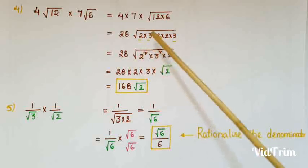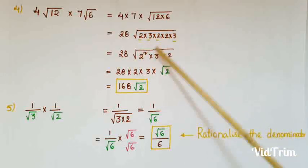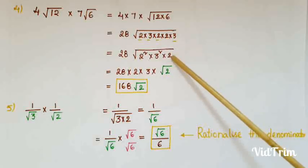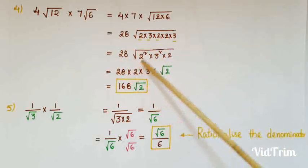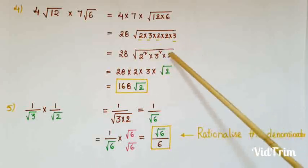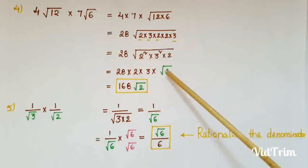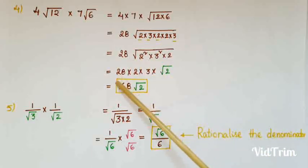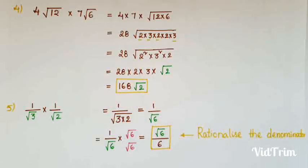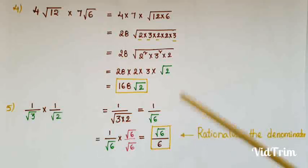Since there is a square root, find the perfect square groups. We get 2² × 3² × 2, so 28 × √(2²) × √(3²) × √2 = 28 × 2 × 3 × √2 = 168√2.